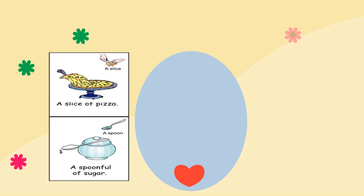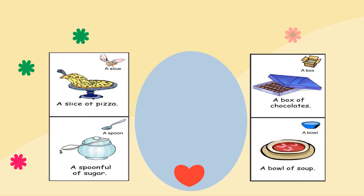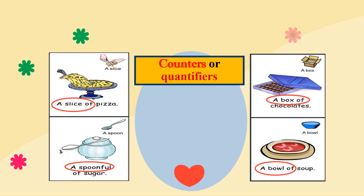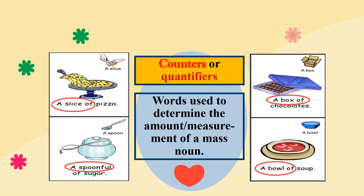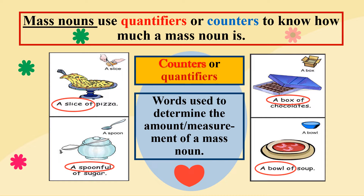Mass nouns cannot be counted, but though they cannot be counted, they can be measured. Like pizza, sugar, chocolates, and soup — we use certain words to determine the amount of mass nouns that we have. For example: a slice of pizza, a spoonful of sugar, a box of chocolates, and a bowl of soup. The words a slice of, a spoonful of, a box of, and a bowl of are called counters or quantifiers. Counters or quantifiers are words used to determine the amount or measurement of a mass noun. Mass nouns use quantifiers or counters to know how much a mass noun is.